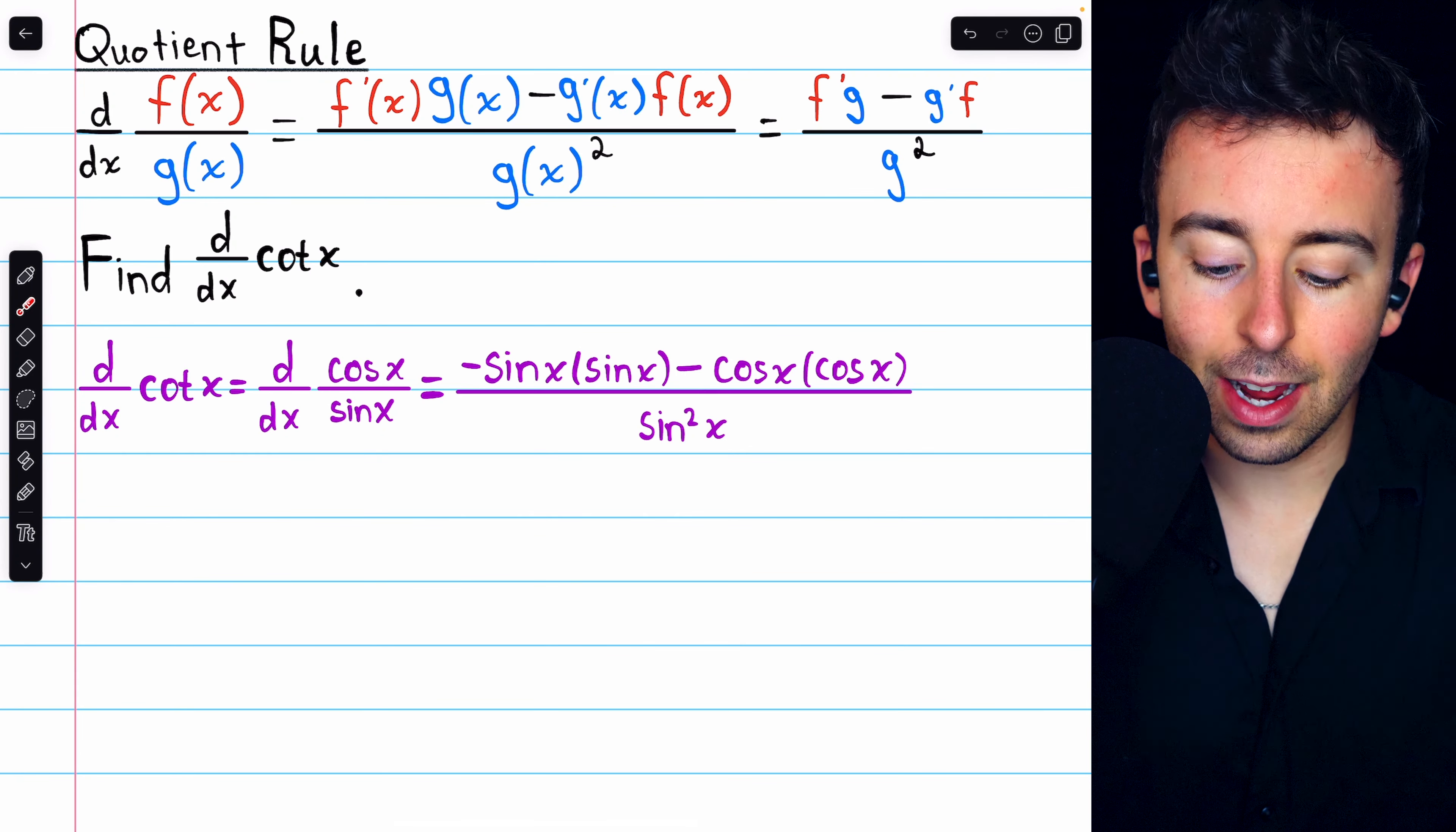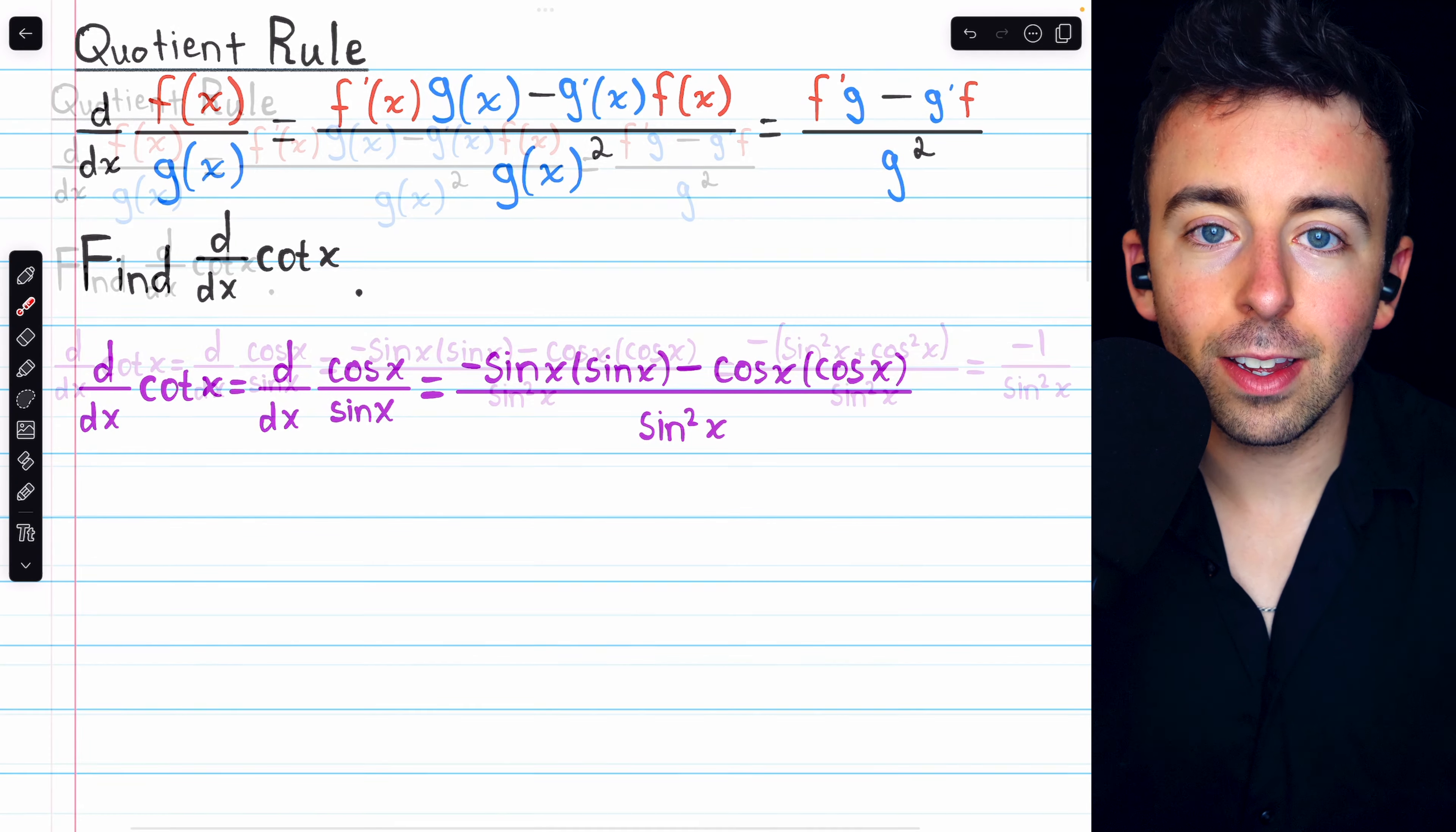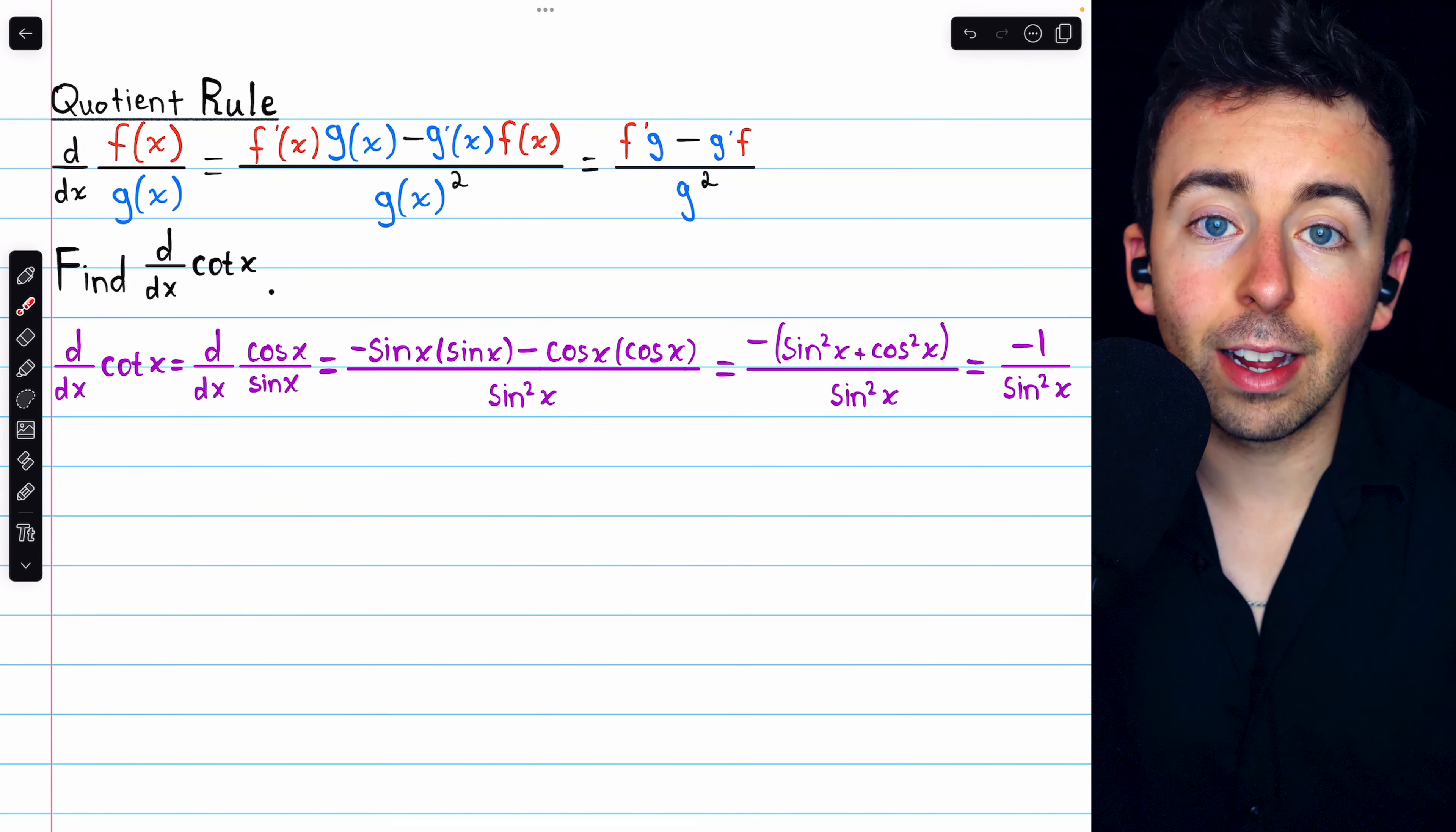Now we just have to simplify. This is negative sine squared and negative cosine squared. So if we take the negative out, we'll have sine squared plus cosine squared. By the Pythagorean identity, we know that's 1. So taking the negative out of the numerator, we have negative sine squared x plus cosine squared x. And we know that is 1. So this is negative 1 divided by sine squared x.